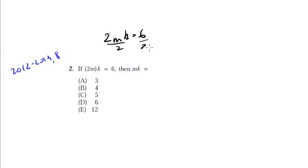So, go ahead and divide by 2, and we're going to get mk is equal to 3, and there you go, so it's just choice A, pretty simple.